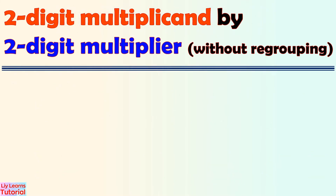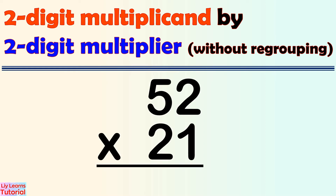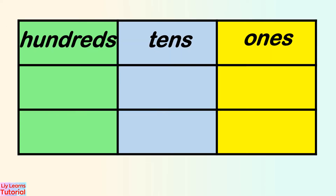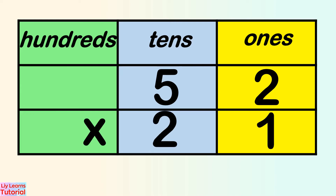Let me show you the steps in multiplying a 2-digit multiplicand by a 2-digit multiplier. Let's solve 52 times 21. Remember, align the numbers to the correct place value: 1, 10, 100, and so on.